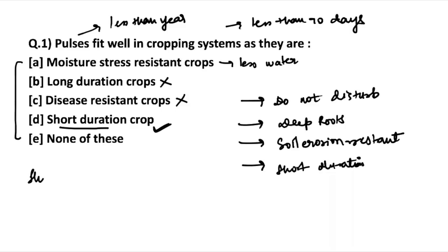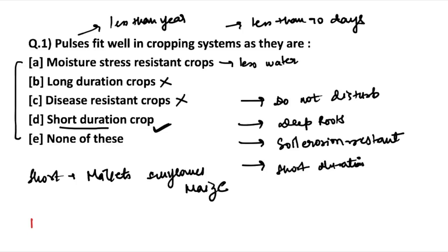Other short duration crops include millets, sunflower, and maize. Long duration crops are those which take more than a year. Can you name some examples of long duration crops in the comment section? Name some long duration crops in the comments.